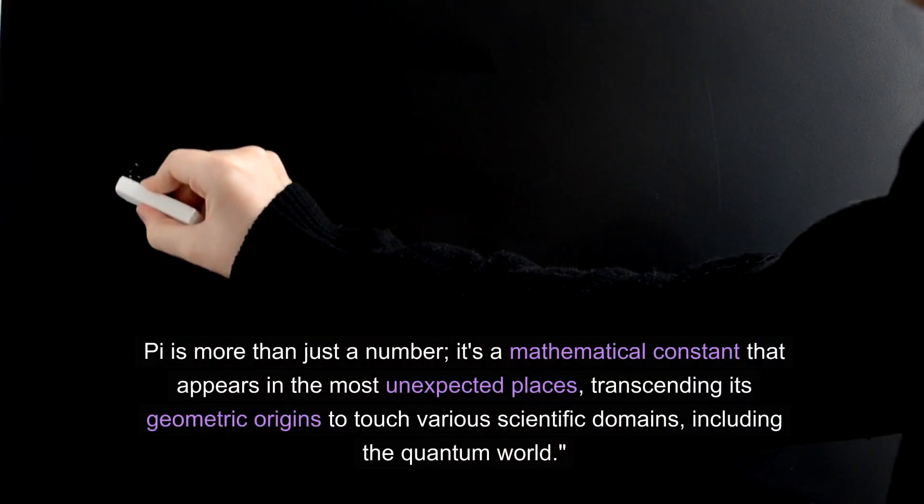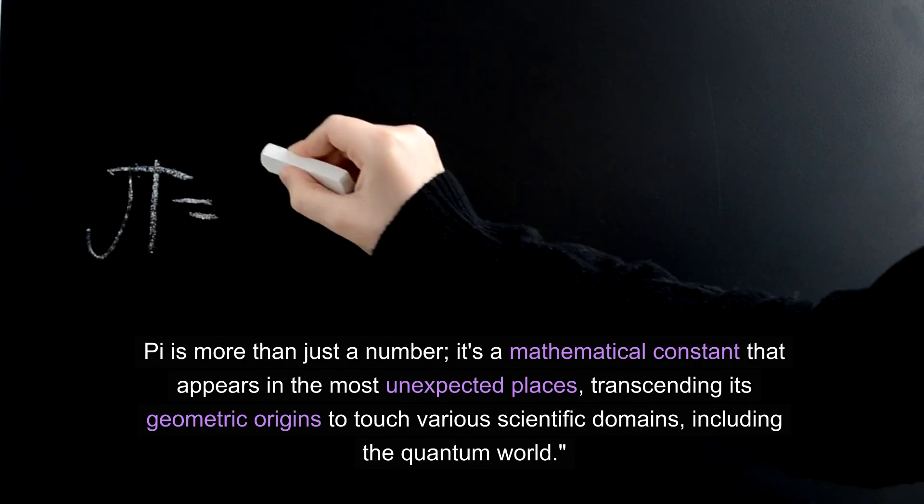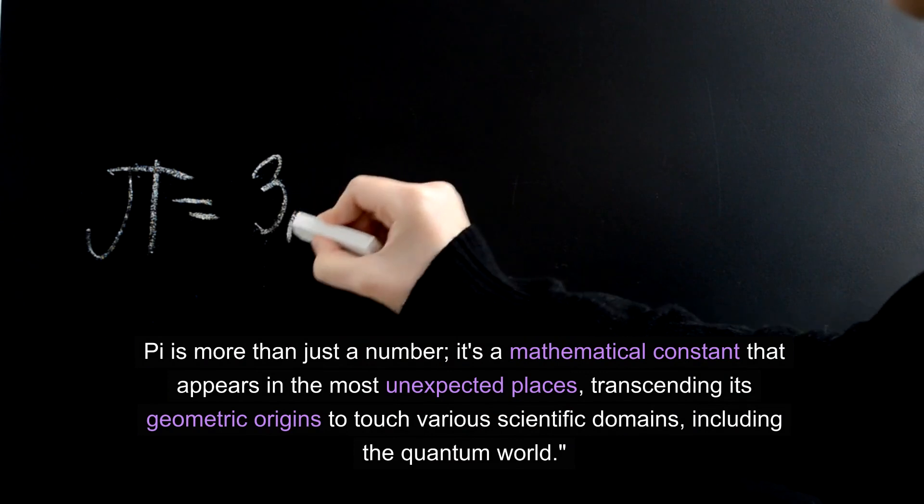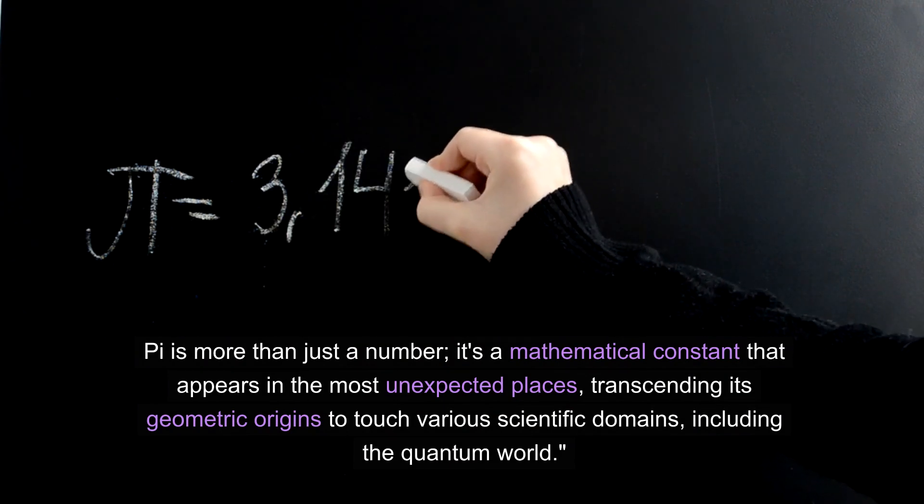Pi is more than just a number. It's a mathematical constant that appears in the most unexpected places, transcending its geometric origins to touch various scientific domains, including the quantum world.